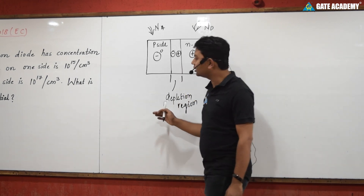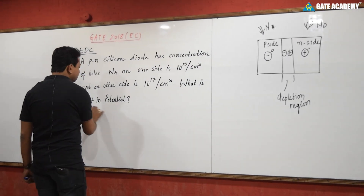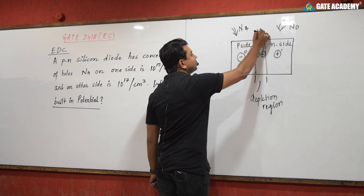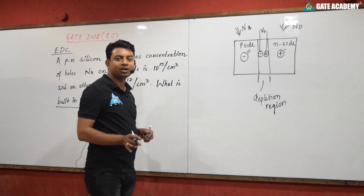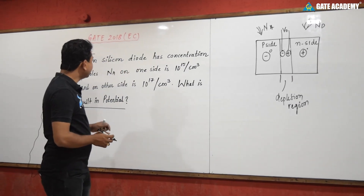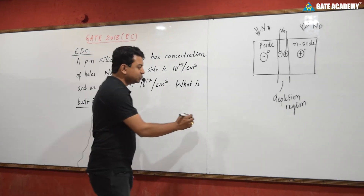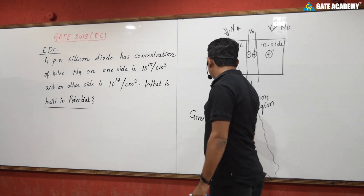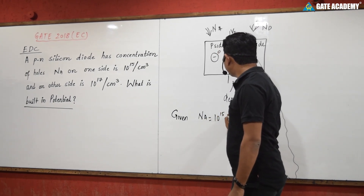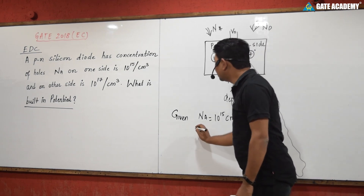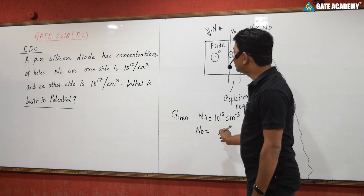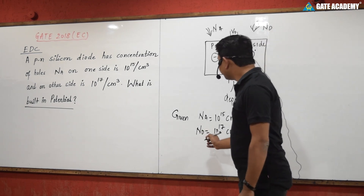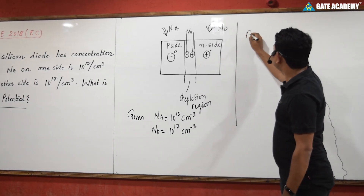Now what we need to find is the built-in potential — the potential V0 that develops at the center due to these negative and positive ions. To find its magnitude, we have a direct formula. First, let us write the given data: NA is equal to 10 to the power 15 per centimeter cube, and ND is equal to 10 to the power 17 per centimeter cube.